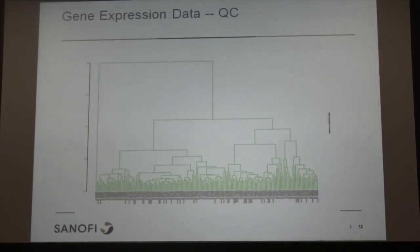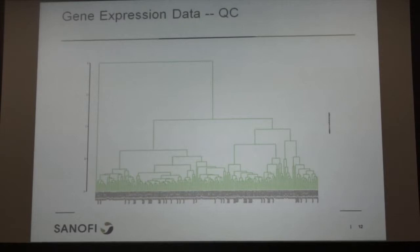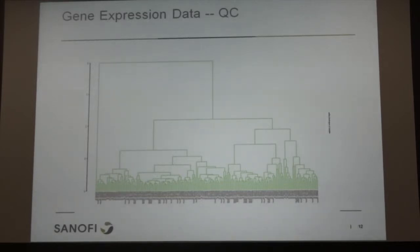One important issue for big data analysis: first, where do you obtain the data? If you don't have data, you can develop all the algorithms but it won't be useful. Second, what about the quality — garbage in, garbage out. So the first thing we need to do is quality control to make sure the data makes sense. For gene expression analysis, one thing we do is hierarchical clustering, also called a dendrogram, where we cluster subjects based on correlations between their gene expression.